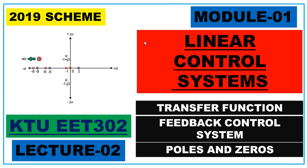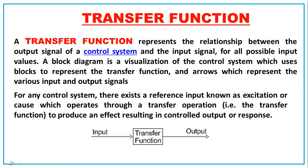A transfer function is a relationship between the input and output — specifically, the relationship between the output signal of a control system and its input signal for all possible input values. The input can be a step, impulse, or parabolic value. A block diagram is a visualization of a control system which uses blocks to represent the transfer function.